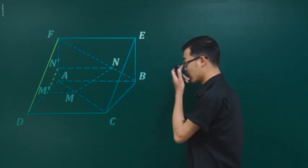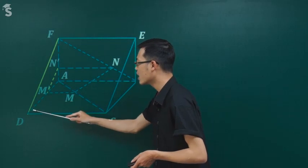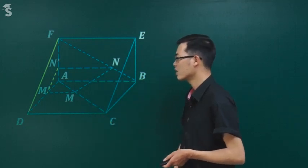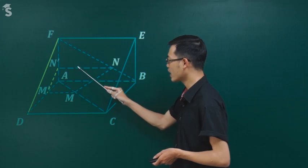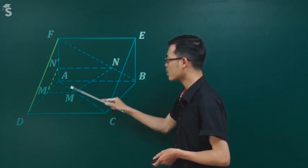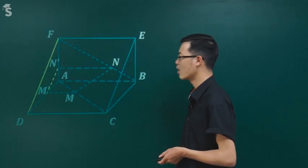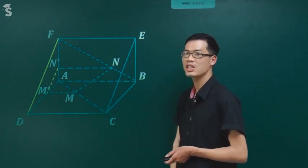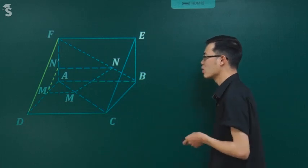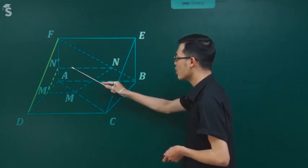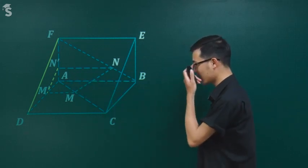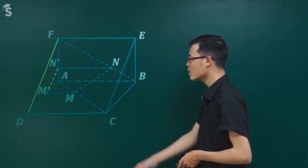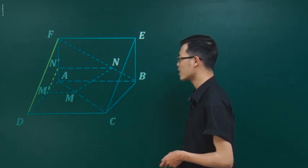Vậy từ AM = BN (giả thiết) và AC = BF (hai hình vuông bằng nhau nên đường chéo bằng nhau), ta suy ra AM/AC = BN/BF. Từ đó kéo theo AM'/AD = AN'/AF, tức là hai tỷ số bằng nhau. Bắt cầu hai cái này bằng nhau là xong. Khi hai tỷ lệ đó thỏa mãn rồi thì trong tam giác ADF ta kết luận M'N' song song DF. Đây chính là điều cần chứng minh - câu B kết thúc thành công.